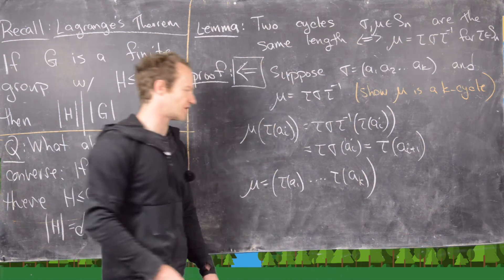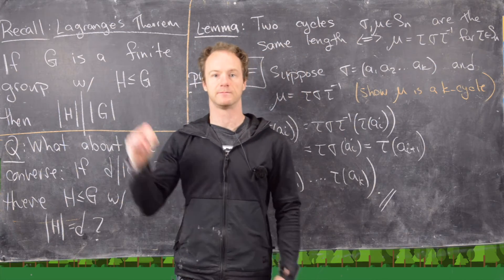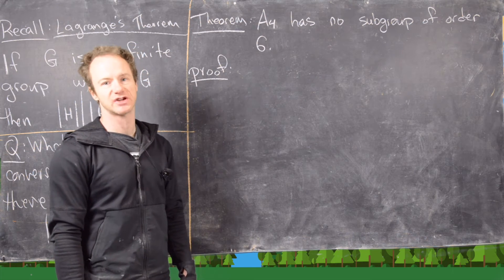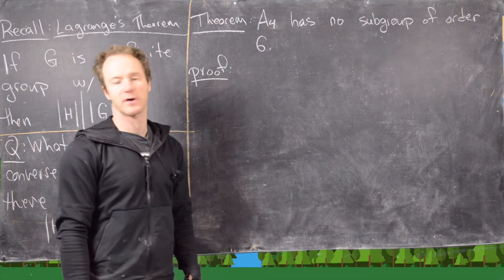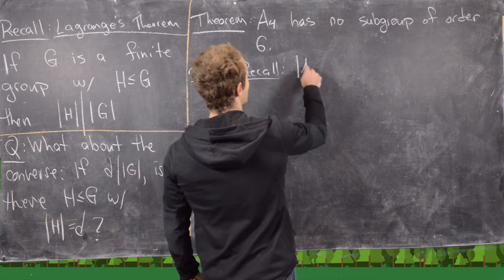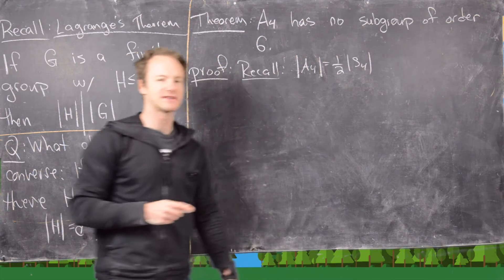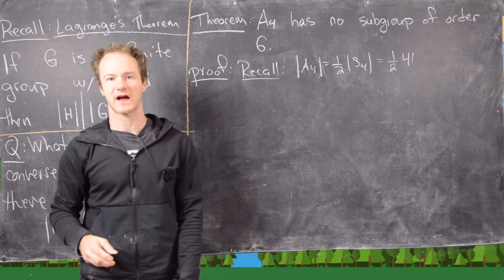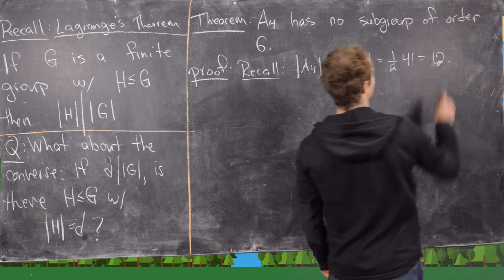We have proven the reverse direction, so now we're ready to construct our example showing there is no converse to Lagrange's theorem. For our example, we look at A4 — the group of even permutations of {1, 2, 3, 4} — and show that A4 has no subgroup of order six. The number of elements in A4 equals half the number in S4. Since |S4| = 4! = 24, we get |A4| = 12.